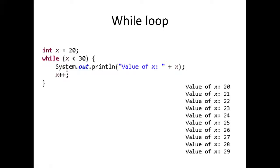Then we increment by 1 and the code jumps right back up to this while loop. So x is no longer 20 — x will now be 21. We do this check again: if 21 is less than 30, which it is, we're going to print System.out.println value of x plus 21, and then from there we increment again. This while loop is going to continue until this condition is not met. Eventually we're going to get to the number 30, and then the while loop is going to say: while 30 is less than 30 — 30 is not less than 30, they're actually the same. So if this condition is not met, the flow of the program is going to break out of this while loop.